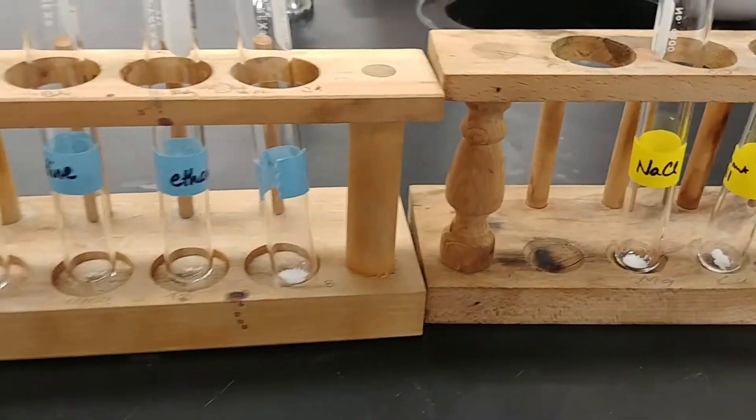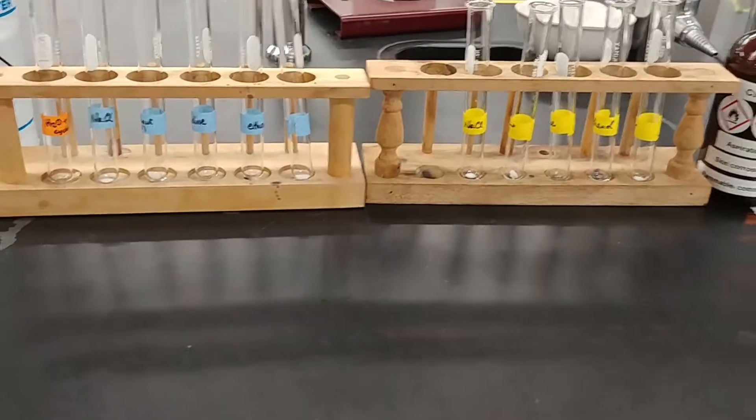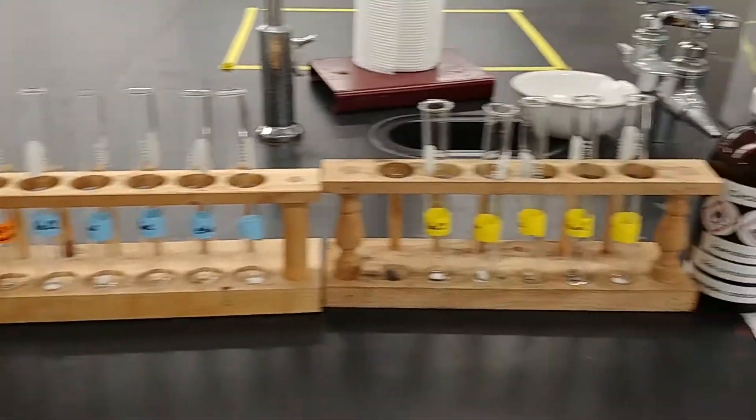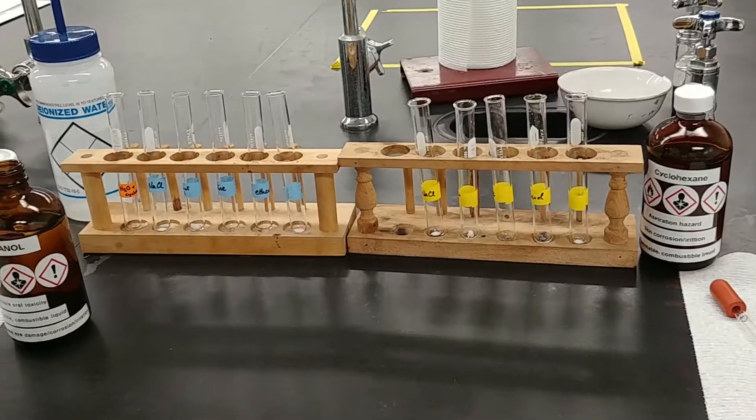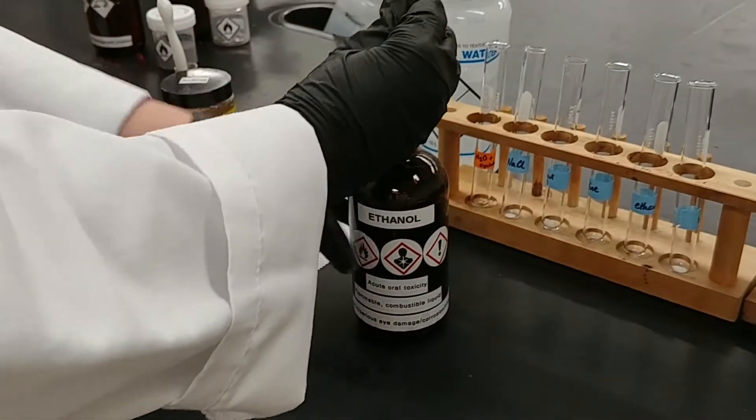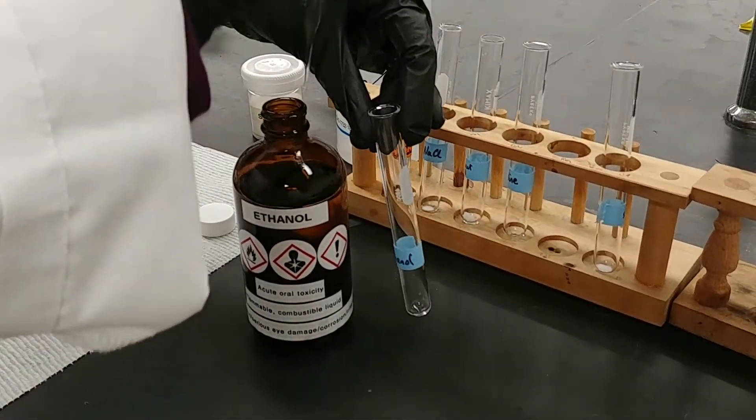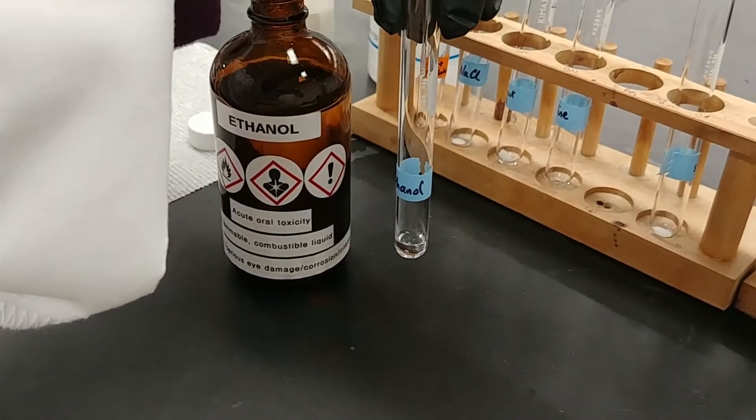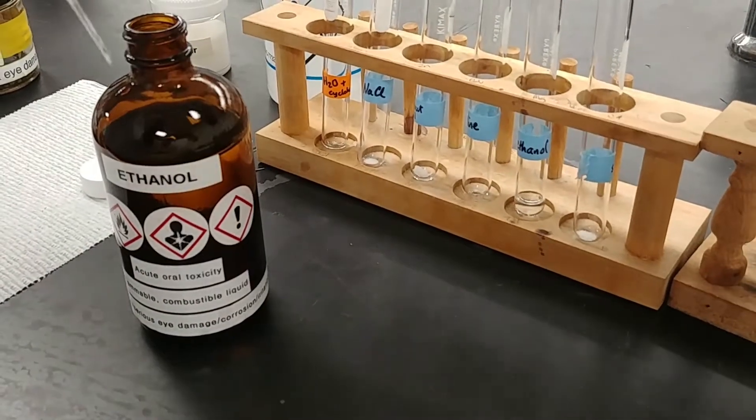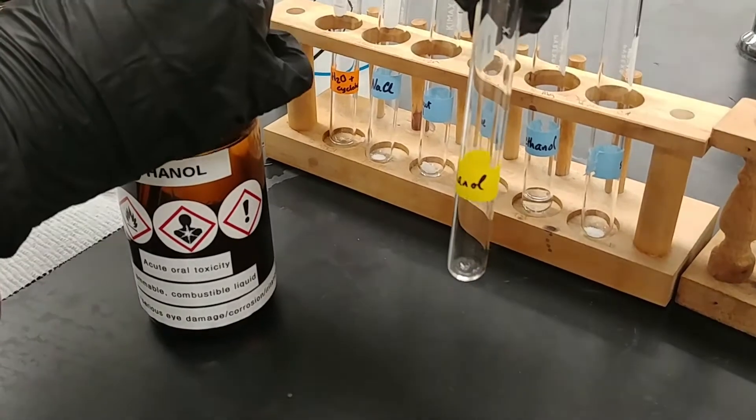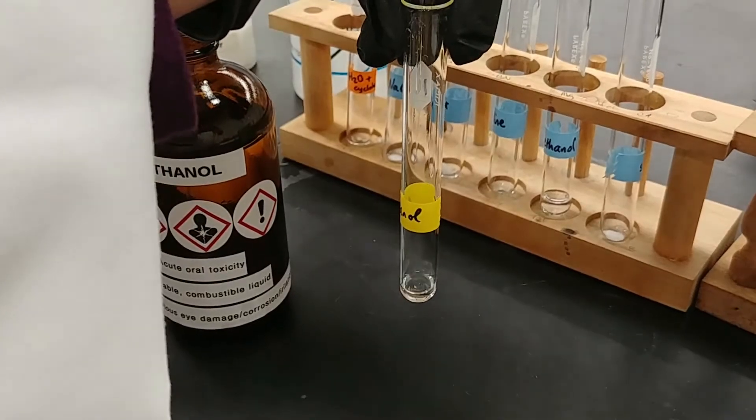Once I get the rest of the solids in here, we will be looking at adding the two solvents and comparing which one does a better job of dissolving our solutes. So I'm going to add some ethanol to my ethanol test tubes. This is a liquid solute. I'm going to add about one milliliter to each of these test tubes so we can see by comparison which solvent does a better job.